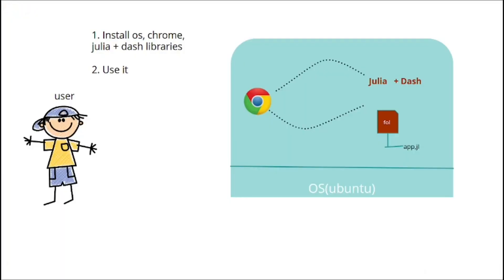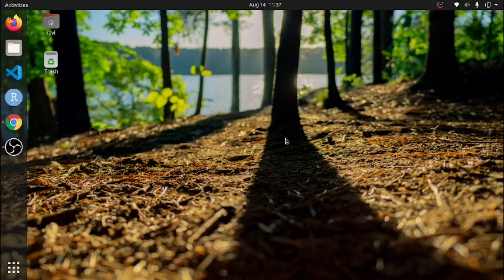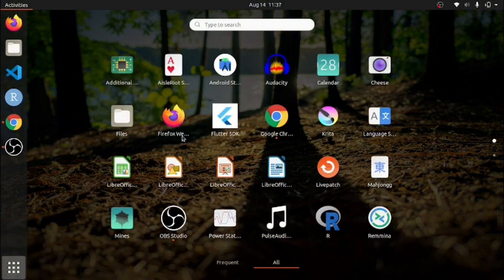Before moving forward, let's look at how we run a Julia app or any application. As you can see, I have installed the Ubuntu operating system and applications like Chrome, Julia, plus Dash libraries, because I am showing you the Dash web application. That's why I need the Dash libraries. This is my operating system, and these apps come by default when you install Ubuntu.